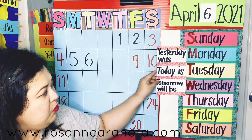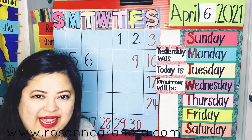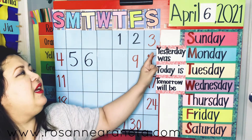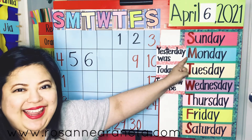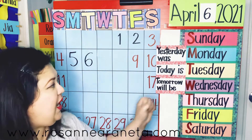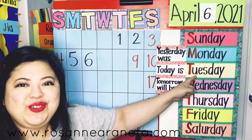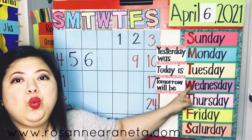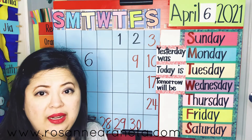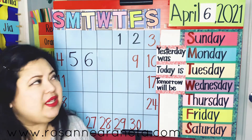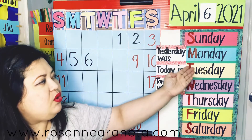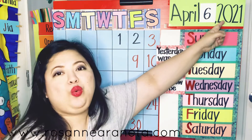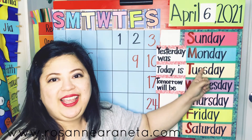This sliding card will now have to move down. Let's review what day it was yesterday by reading what it says right here on the sliding card. Yesterday was Monday. So if yesterday was Monday, today is Tuesday. And if today is Tuesday, tomorrow will be Wednesday. Today is April 6, 2021, and today is a Tuesday.